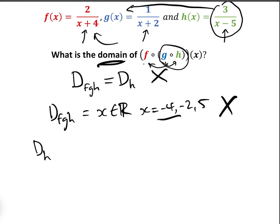The domain of h to start with is clearly all x, but x not equal to five, because we cannot have x equal to five — if x equals five, then x minus five is zero and we're dividing by zero.